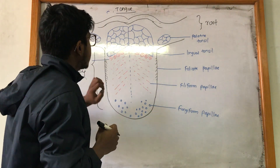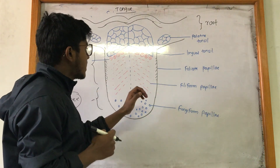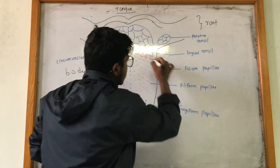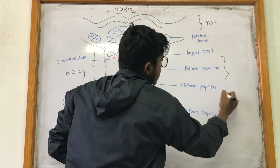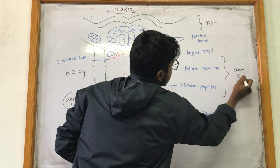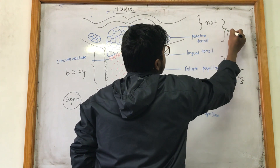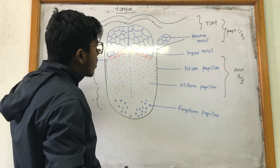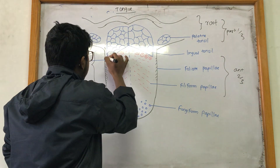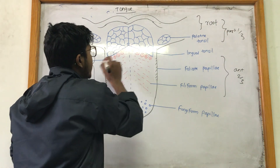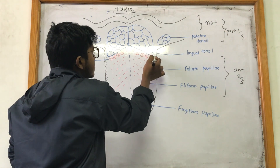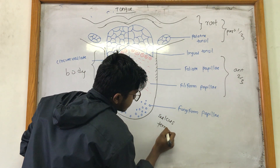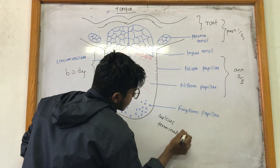The tongue is divided into two parts: the anterior two-thirds and the posterior one-third. The imaginary line that divides these two parts is called the sulcus terminalis.